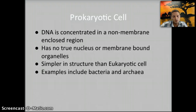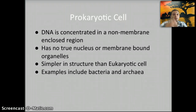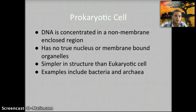To start out, in a prokaryotic cell, the DNA is in a concentrated group, enclosed region, in a non-membrane-bound organelle. So usually you would think of DNA being found in a nucleus, while in a prokaryotic cell it's in a region called the nucleoid region, and it's found just free-floating within the cytoplasm. It doesn't have a true nucleus or membrane-bound organelles. It's very much simpler in structure than a eukaryotic cell, and some examples would include bacteria and archaea.